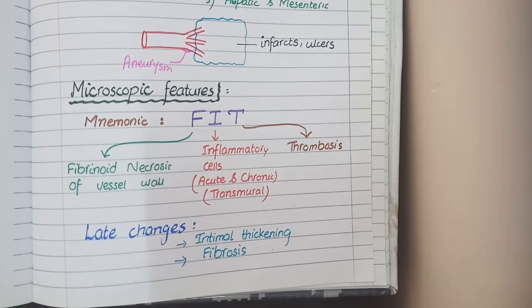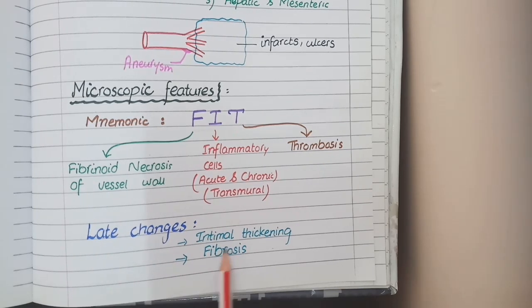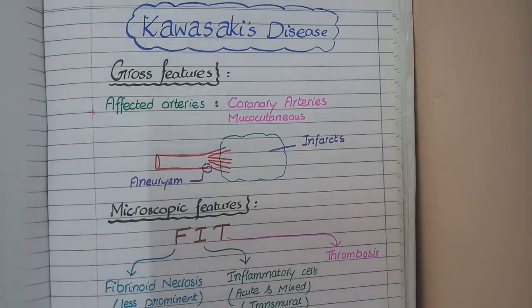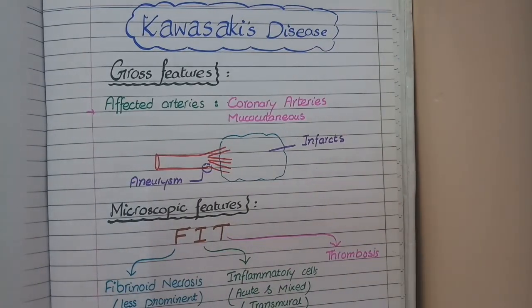Along with these changes, the late changes in polyarteritis nodosa are the same as in all cases of vasculitis: intimal thickening and fibrosis of the vessel wall.